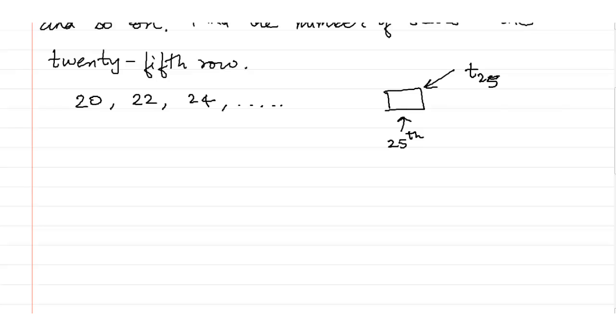So what information do we have at hand? We know that the first number a is 20. We know the common difference is 22 minus 20 which is 2. And we also know that number of row is 25 because we need to find t25.